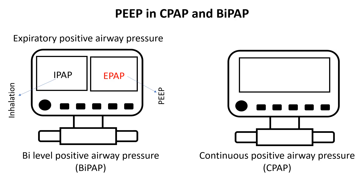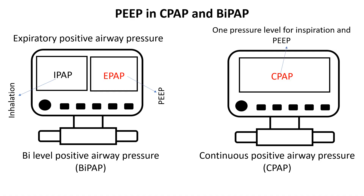Continuous positive airway pressure, on the other hand, delivers a single continuous steady pressure throughout the respiratory cycle. This constant pressure prevents airway collapse, functioning similarly to PEEP during exhalation.